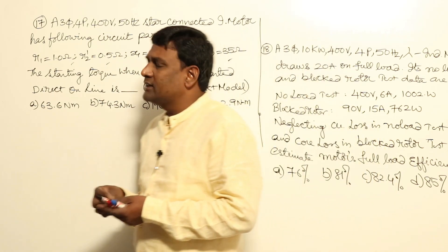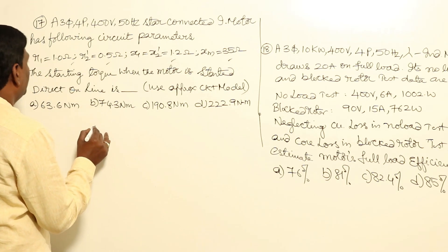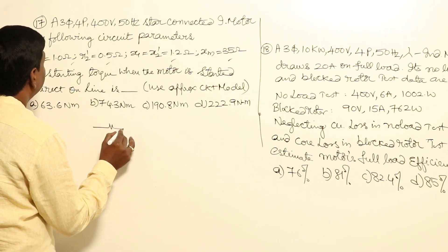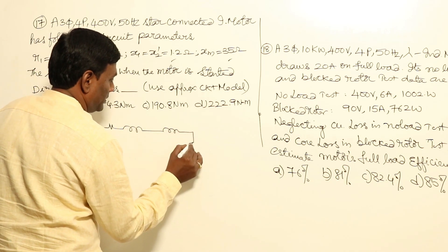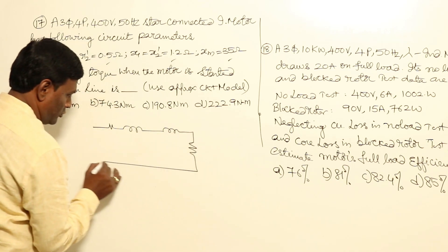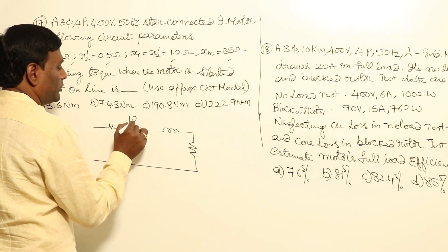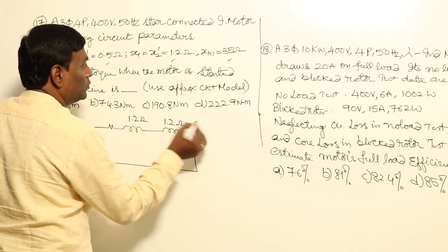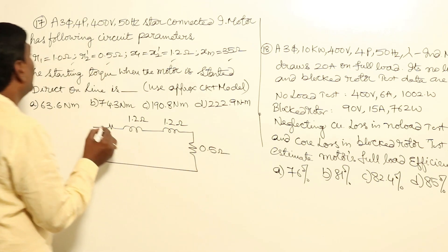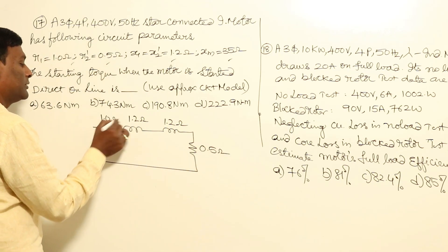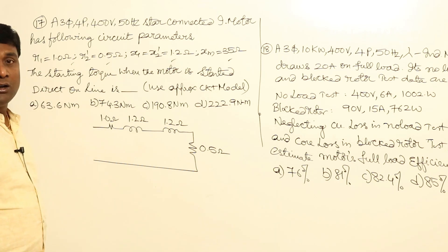When slip is 1, how much is the starting torque? Let us use the approximate equivalent circuit model with R1, X1, X2 dash, and R2 dash. R1 is 1.2 ohm, X1 is 1.2 ohm, R2 dash is 0.5 ohm, and X2 dash is 1.0 ohm.